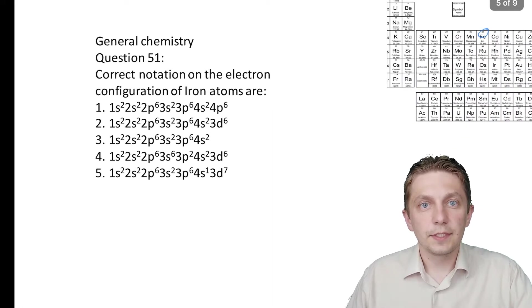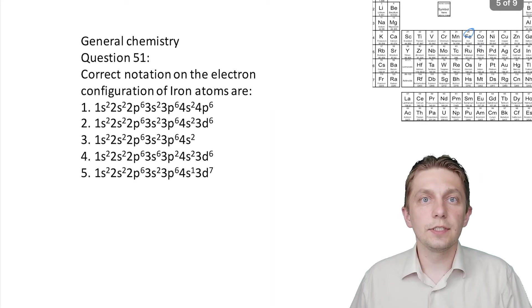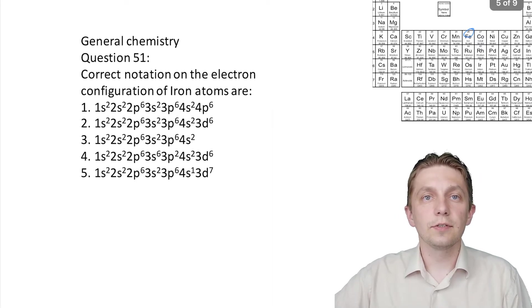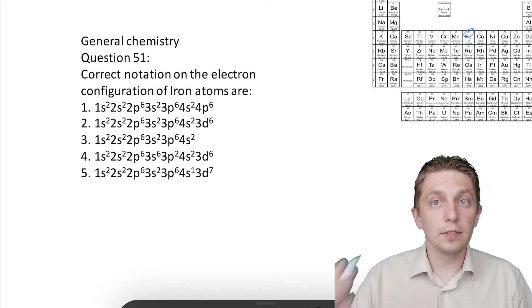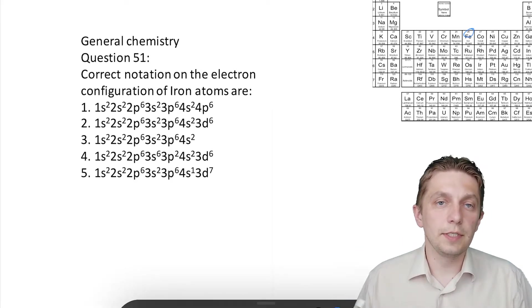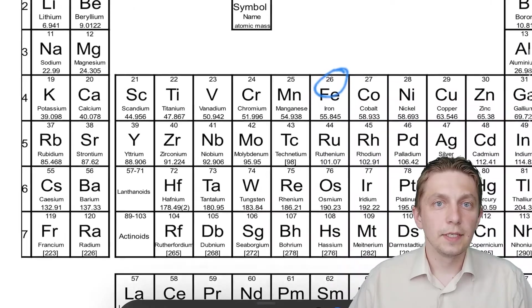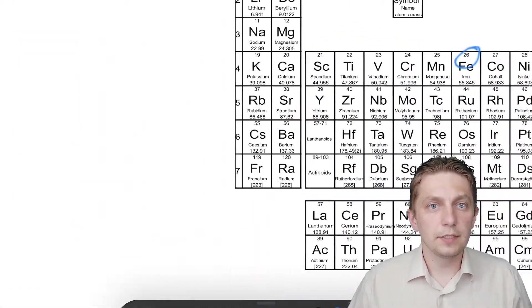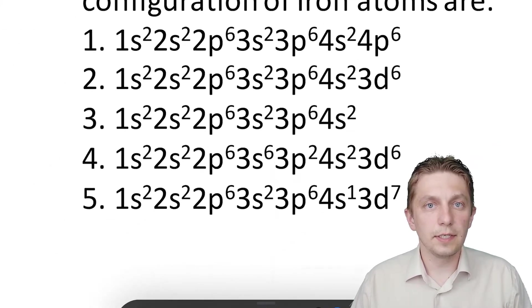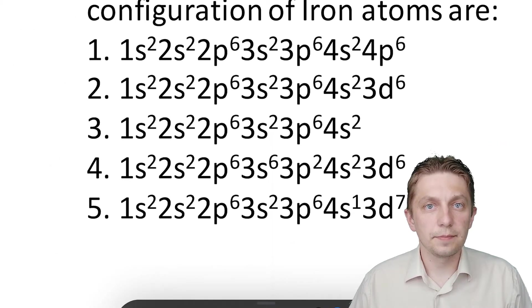Question 51. Correct notation for electron configuration of iron atoms are - by the way, on exams you can use web periodic table and web calculator. At first we find iron. And let's check. At least number of electrons should be the same.